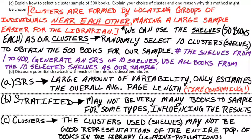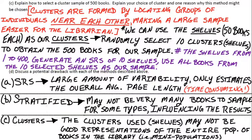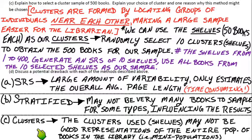We now have three sampling methods to choose from: simple random sample, where you label everybody and randomly select individuals; stratified random sample, where you define strata, then do an SRS within each group; and cluster sampling, where you find groups of individuals near each other — hopefully resembling mini populations — randomly select clusters, and include everyone in the selected clusters in the sample. That is all for these notes.